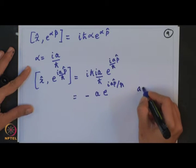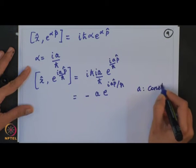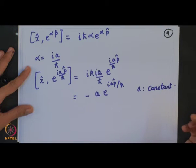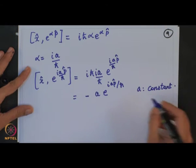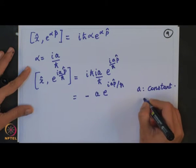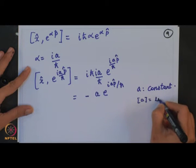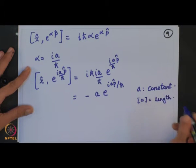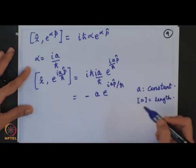Remember a is a constant, and it has the dimension of length. You can see this dimensionally from the expression — it is very simple to see from here.